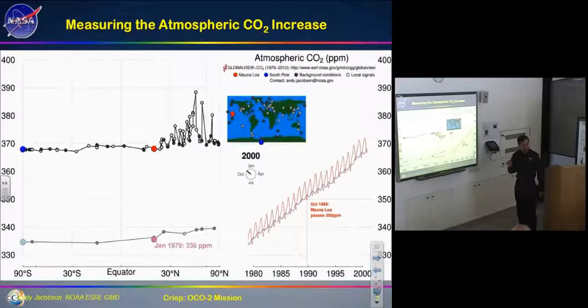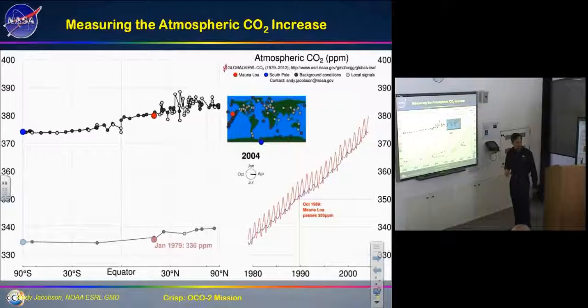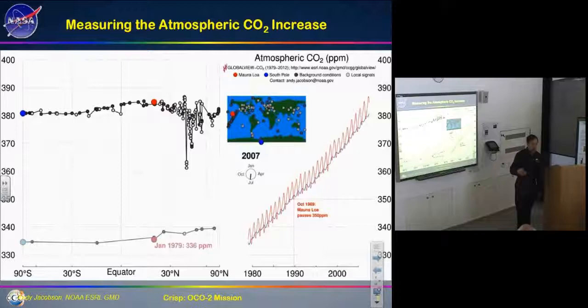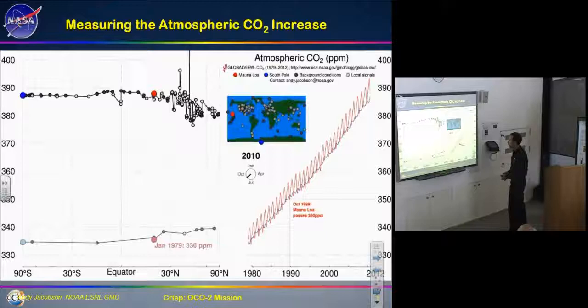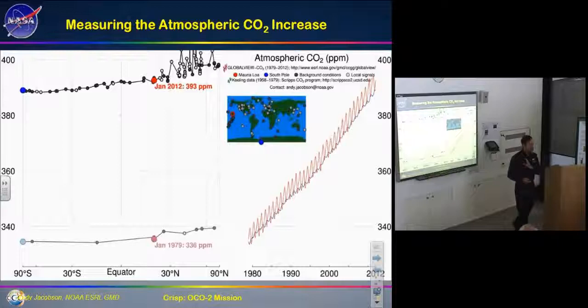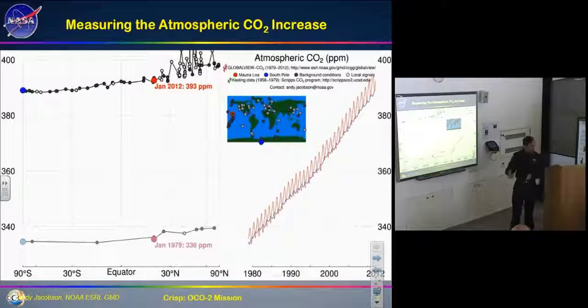This network has taught us a lot about the carbon system, but it hasn't told us in detail where the carbon is coming from or what processes are absorbing it and where they're located. We don't know where the sources are and we don't know where the sinks are. Part of the reason is the network has very few stations in South America, Africa, and Asia.